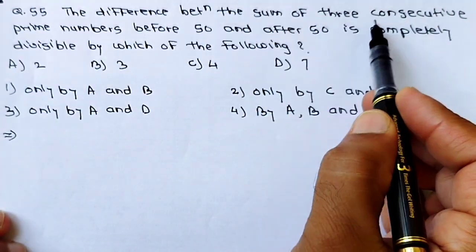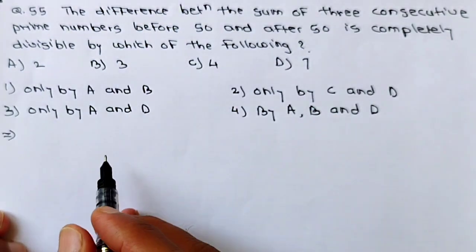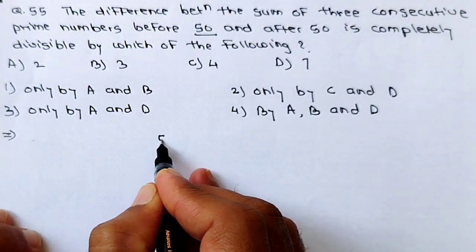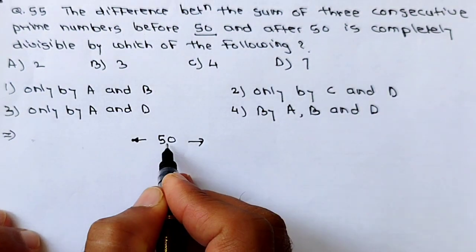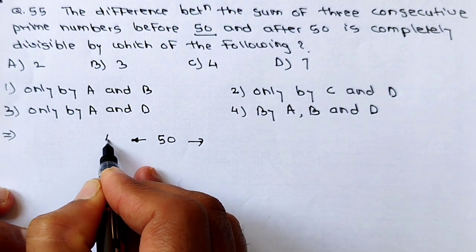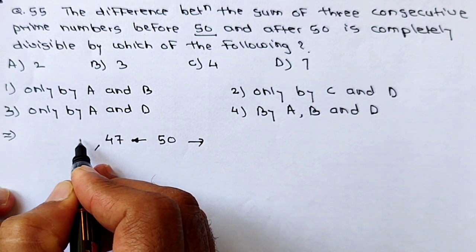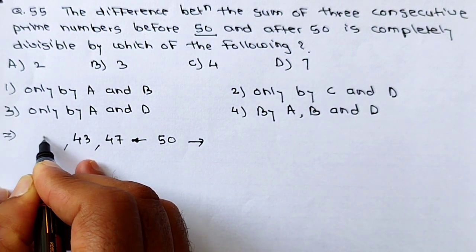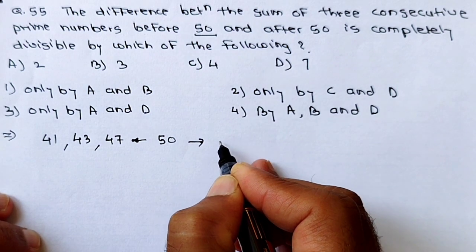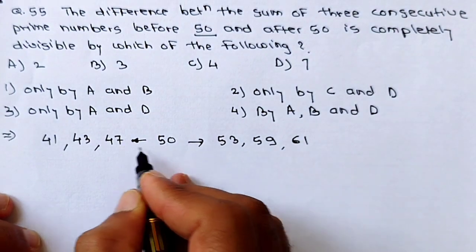Question number 55: The difference between the sum of 3 consecutive prime numbers before 50 and after 50 — each completely divisible by which of the following? Prime numbers are divisible by 1 and the number itself. Before 50: checking — 49 is divisible by 7 (not prime), 48 is even, 47 is prime; 46 is even, 45 divisible by 5, 44 even, 43 is prime; and 41 is prime. After 50: 51 is divisible by 17 (not prime), 52 is even, 53 is prime; then 59 and 61 are prime.